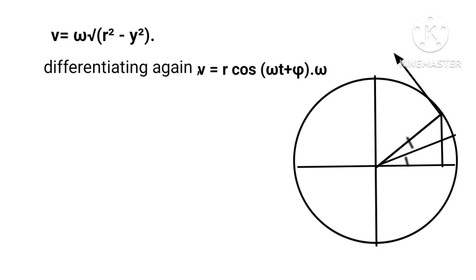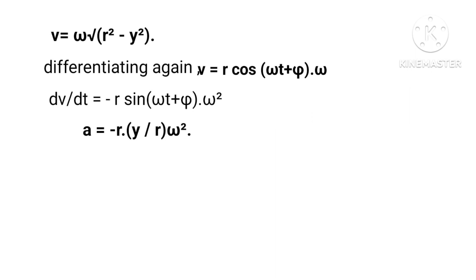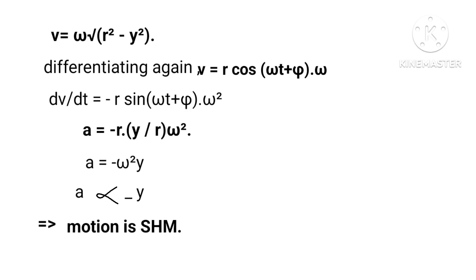Differentiating again, from V equals r cos(ωt + φ)·ω, we get acceleration a equals r sin(ωt + φ)·ω². Since y equals r sin(ωt + φ), this gives a equals (y/r)·ω²·r, and finally a equals ω²y. That is, acceleration is directly proportional to negative displacement, which implies the motion is SHM.